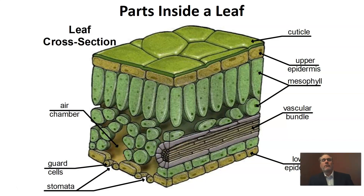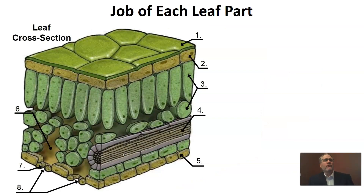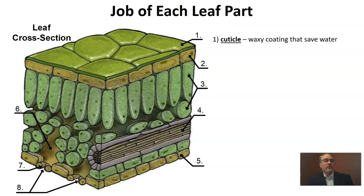Let's take a look at what each one of these parts does. First is the cuticle — the cuticle is a waxy coating on the outside of leaves. If you've ever looked at a leaf and thought it was really shiny and glossy, you're looking at a leaf that has a thick, well-coated cuticle. The whole point of the cuticle is it helps plants save water — it's for protection. Wax and water don't mix, and the wax keeps the water on the inside of the leaf.